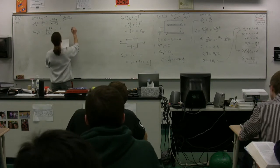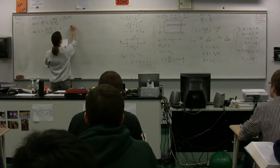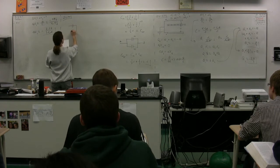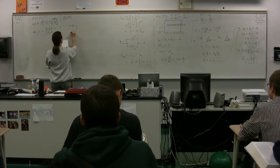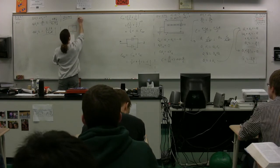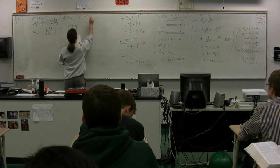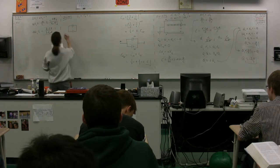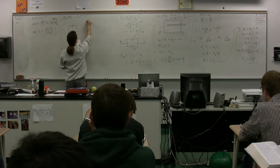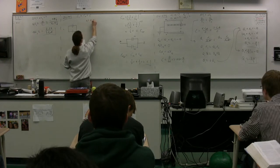Two identical parallel plate capacitors, each with capacitance C, are charged with potential difference and connected in parallel. Then the plate separation in one of the capacitors is doubled. Part A: find the total energy of the system of two capacitors before the plate separation is doubled.